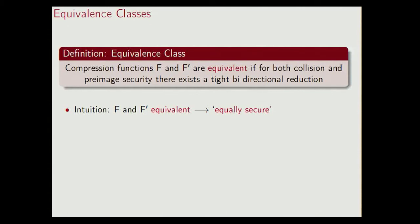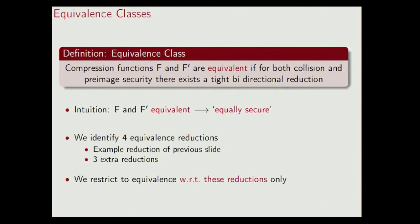In the work, we define four equivalence reductions. One is the one where you swap the first two rows. The other three are rather similar — one can see them as linear operations on the constants. We proved that these reductions really work, so the two examples on the previous slide are indeed equivalent. And in our work, we restrict to equivalence with respect to these four reductions only.